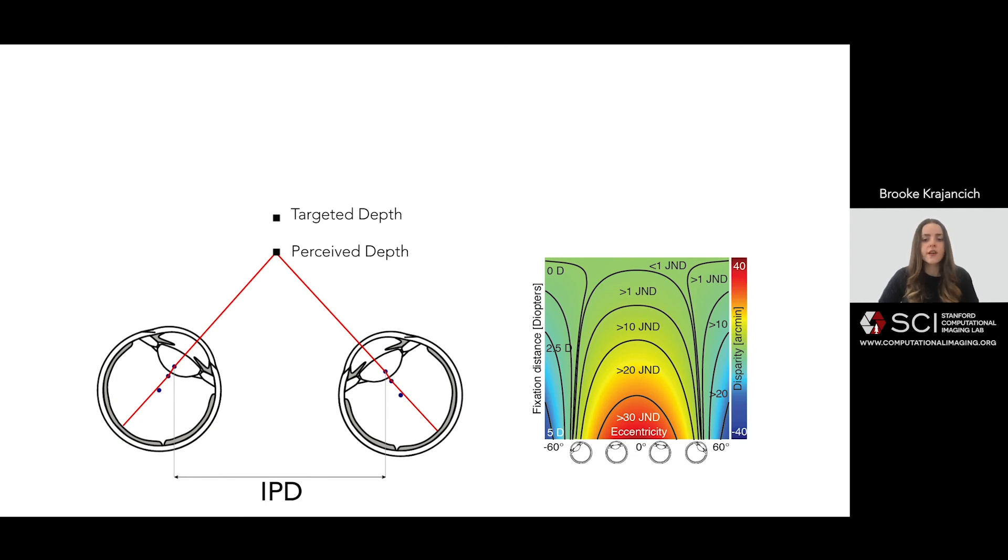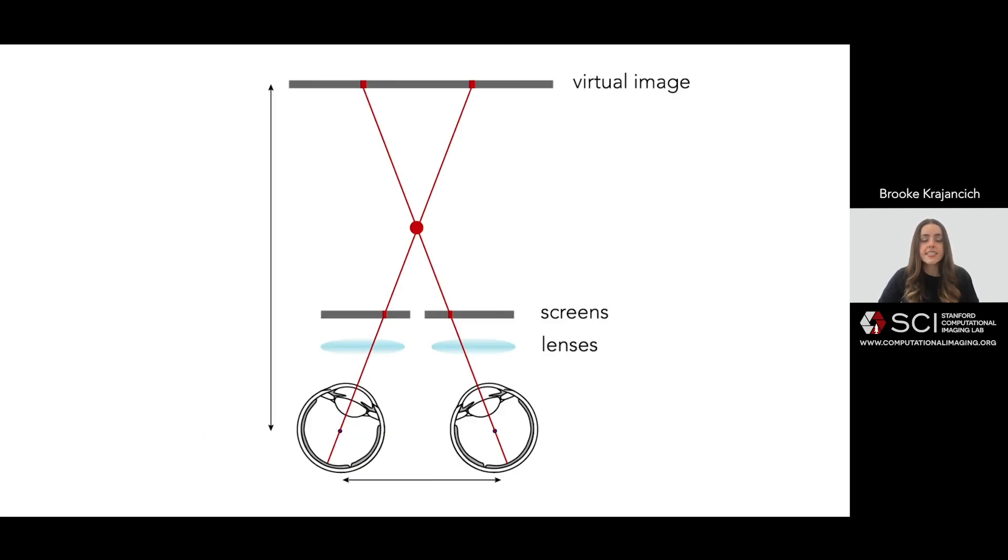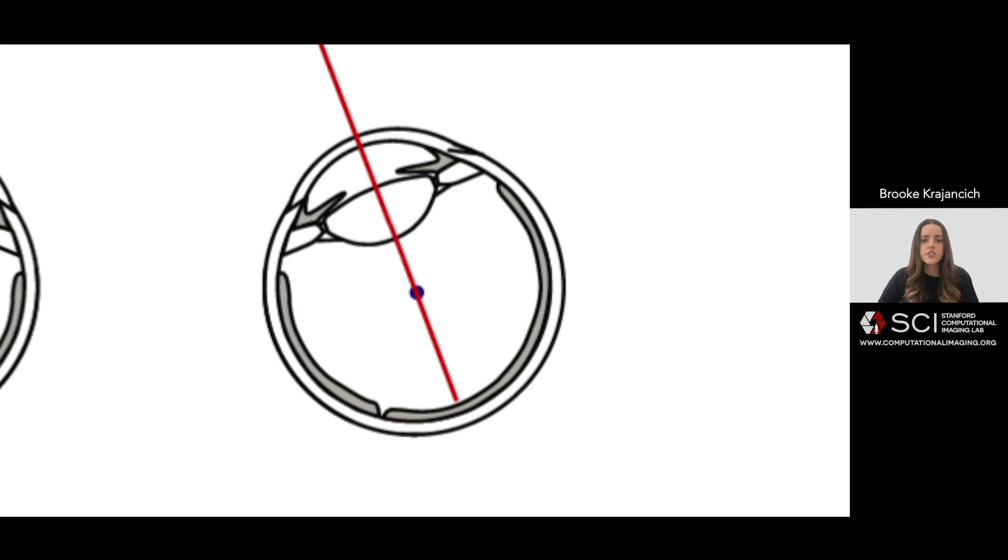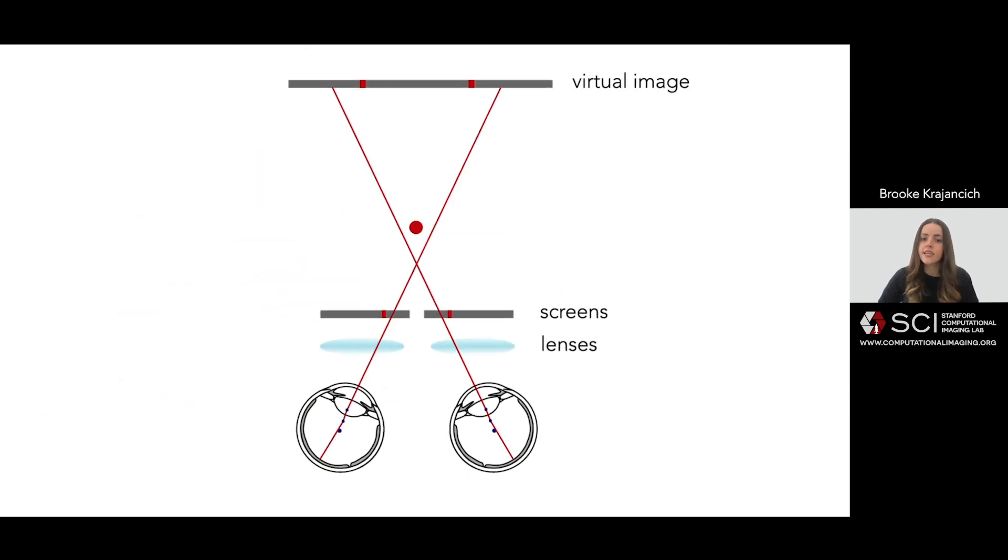This is where gaze contingent stereo rendering can help. With access to gaze position, as is possible with increasing use of inbuilt eye trackers, we can modify the matrices used in stereo rendering to trace our center of perspective to be at the front nodal point, and pointed along the visual axis, then proceed as before.